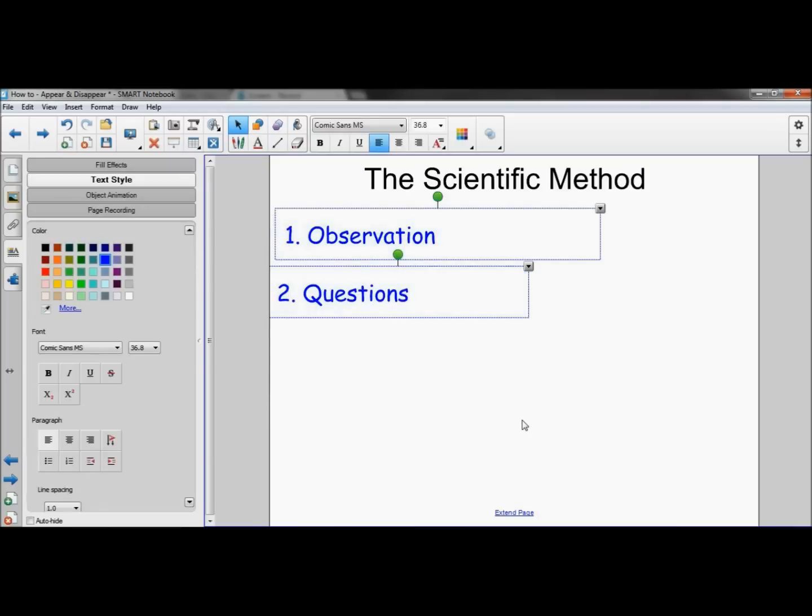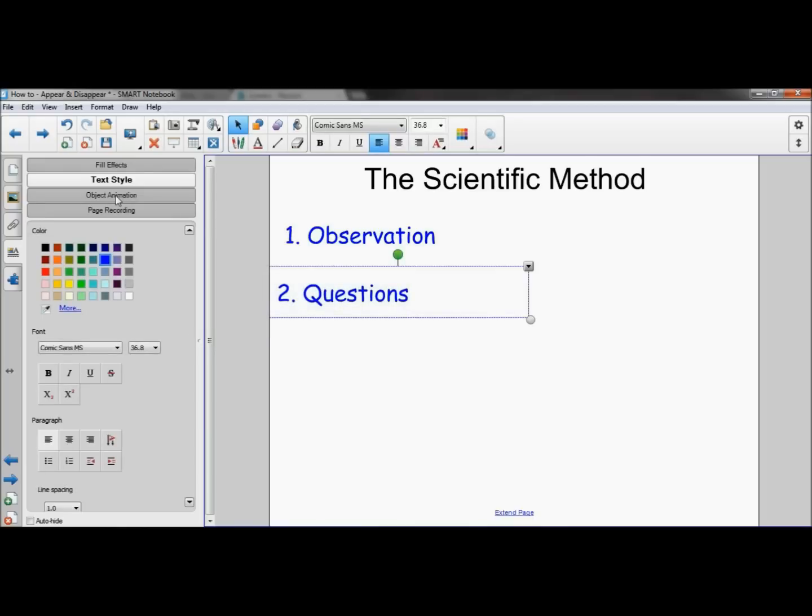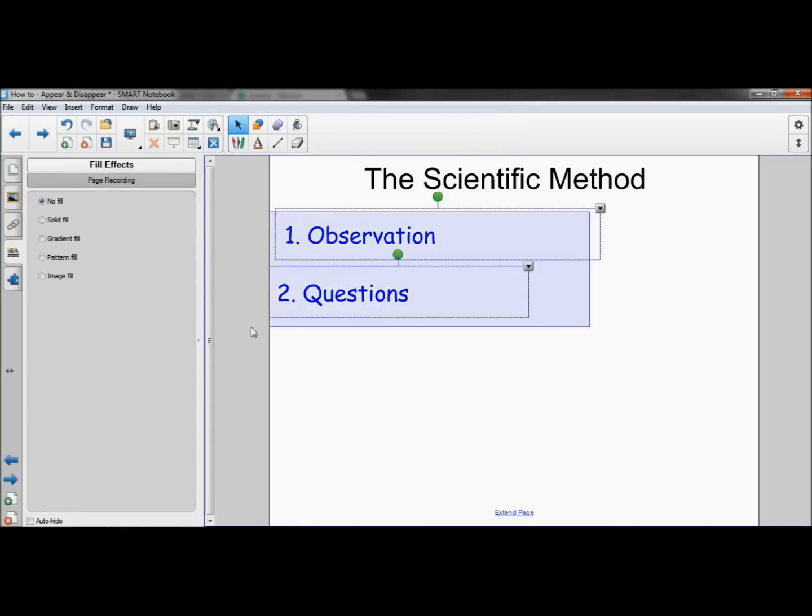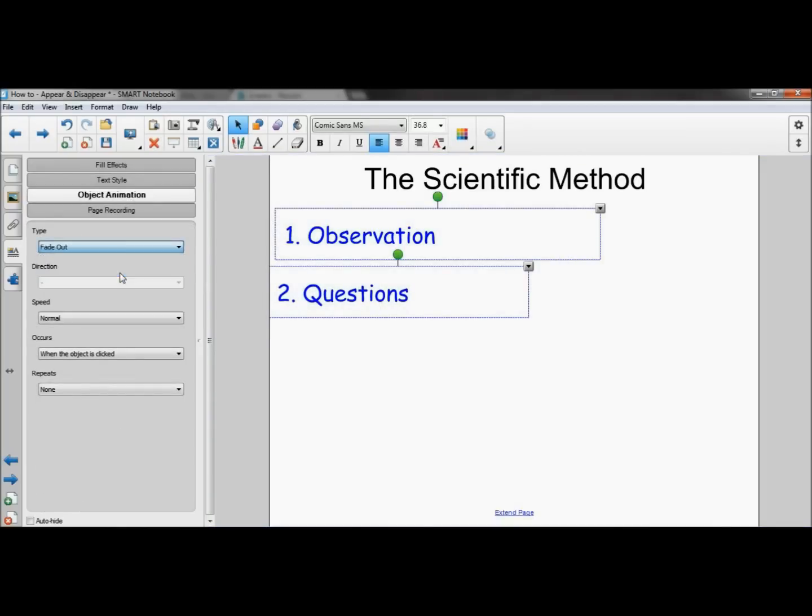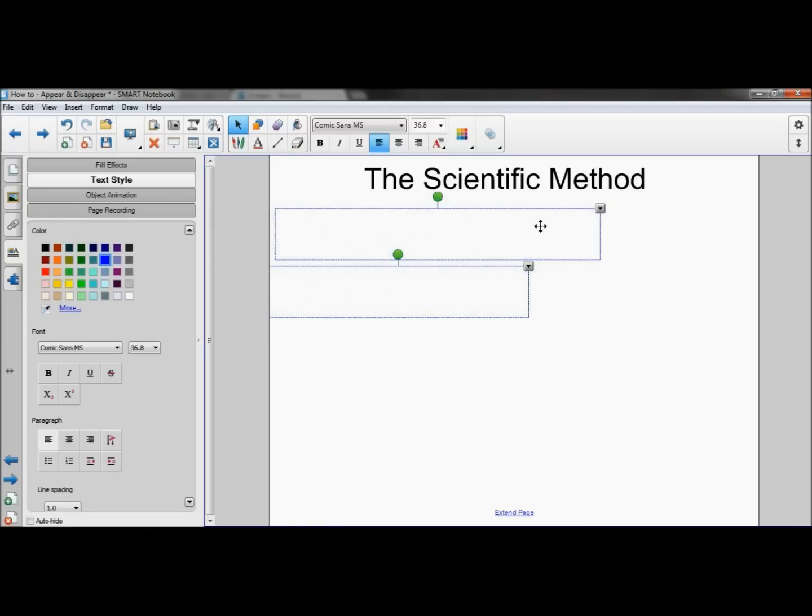Now let's say you wanted to change both of these to fading out. Rather than selecting one at a time and changing it, we can select both of these and change them at the same time. Now they would both fade out. Now understand that they will not fade out at the same time because they are indeed two different objects, and we can see that by the two things that are highlighted here.